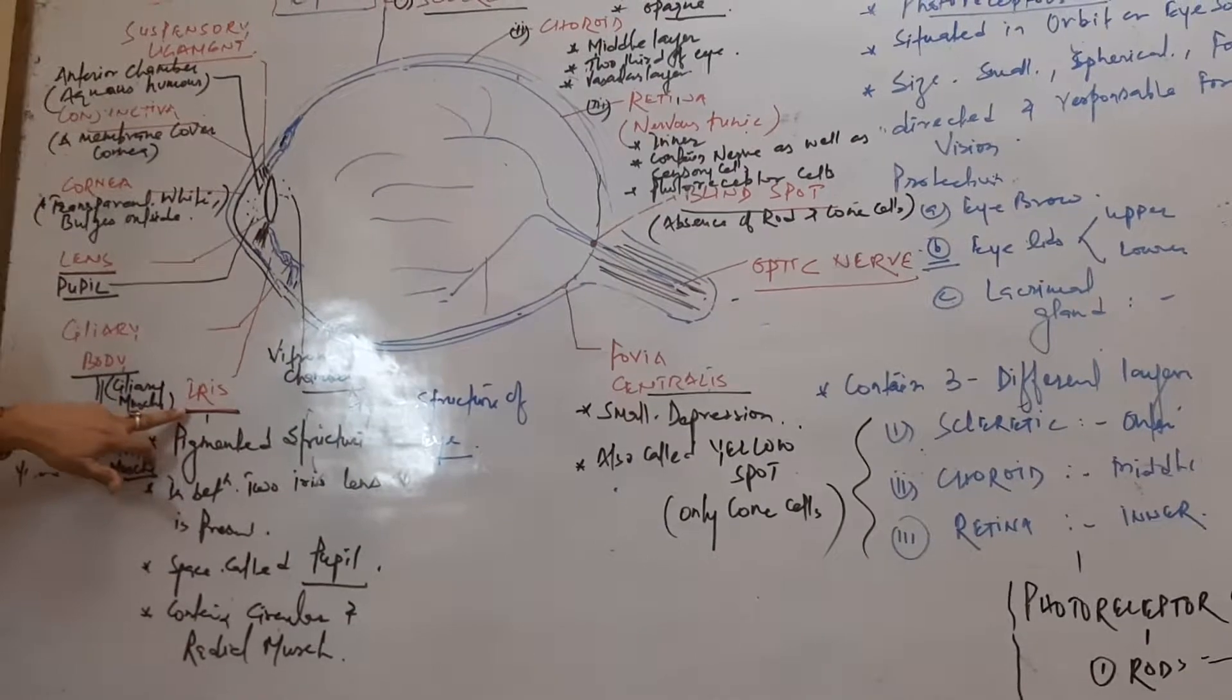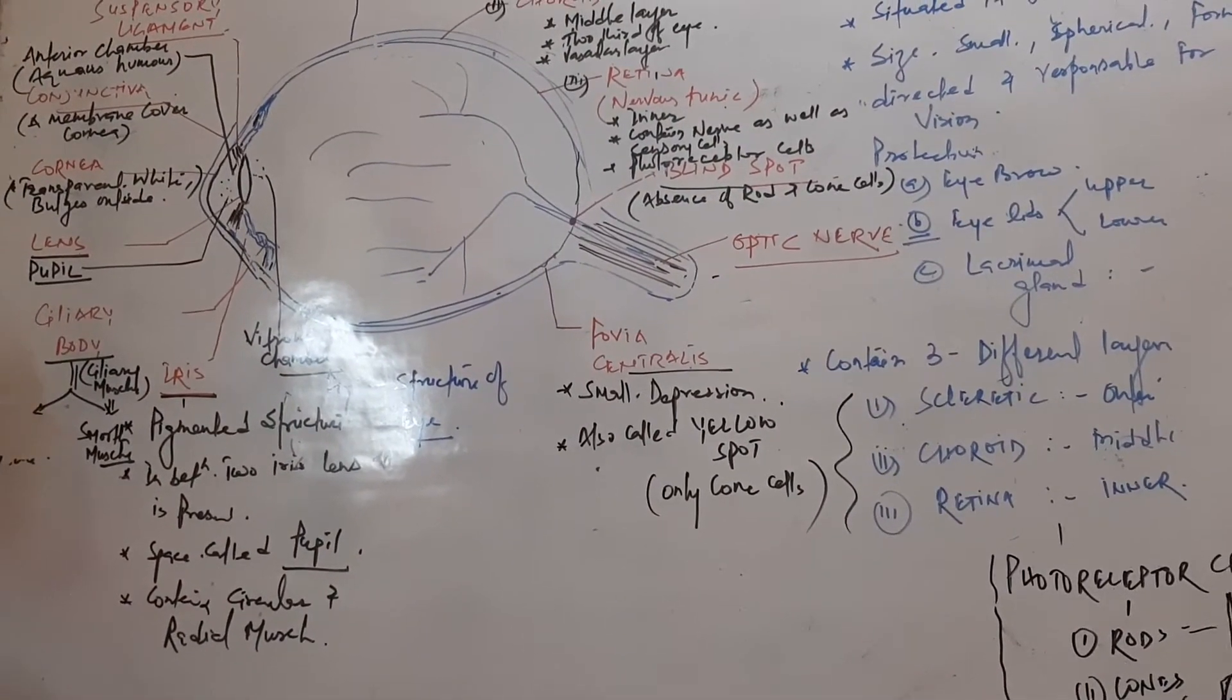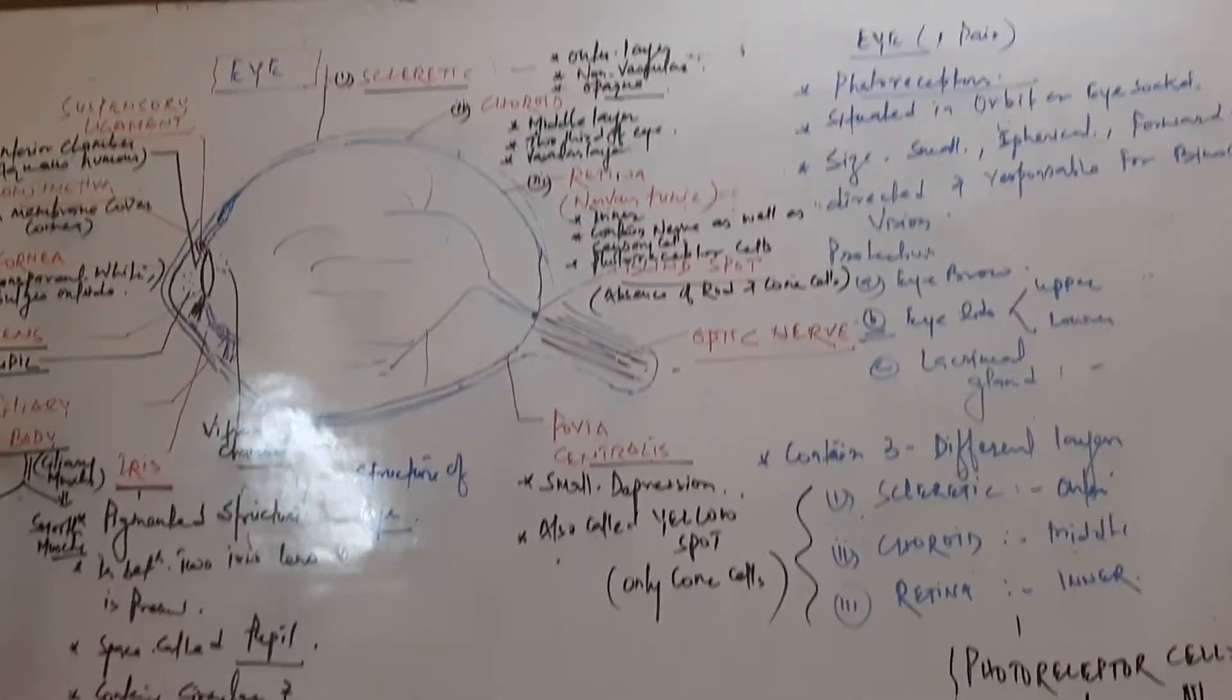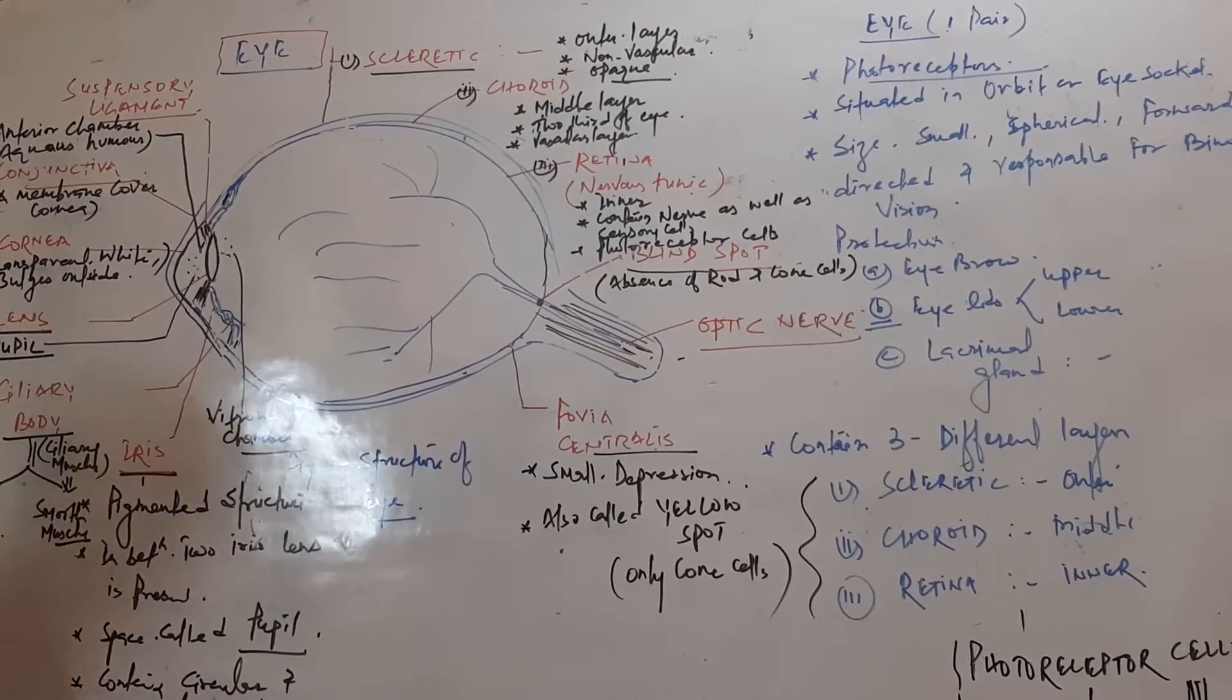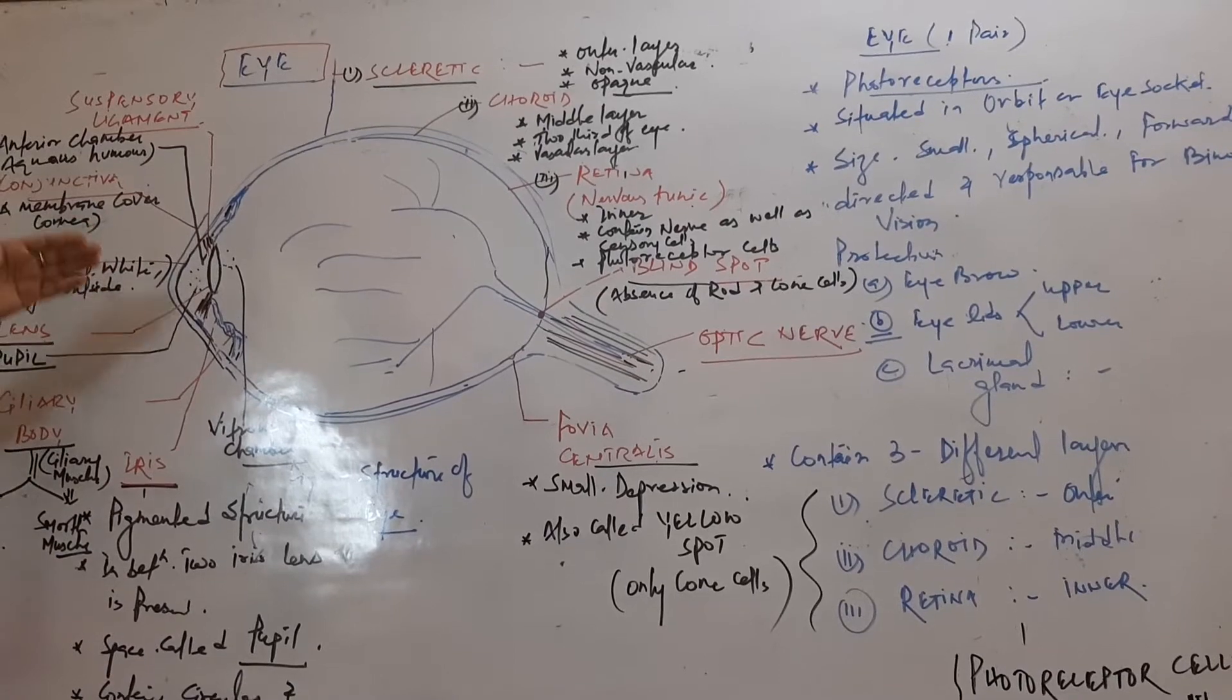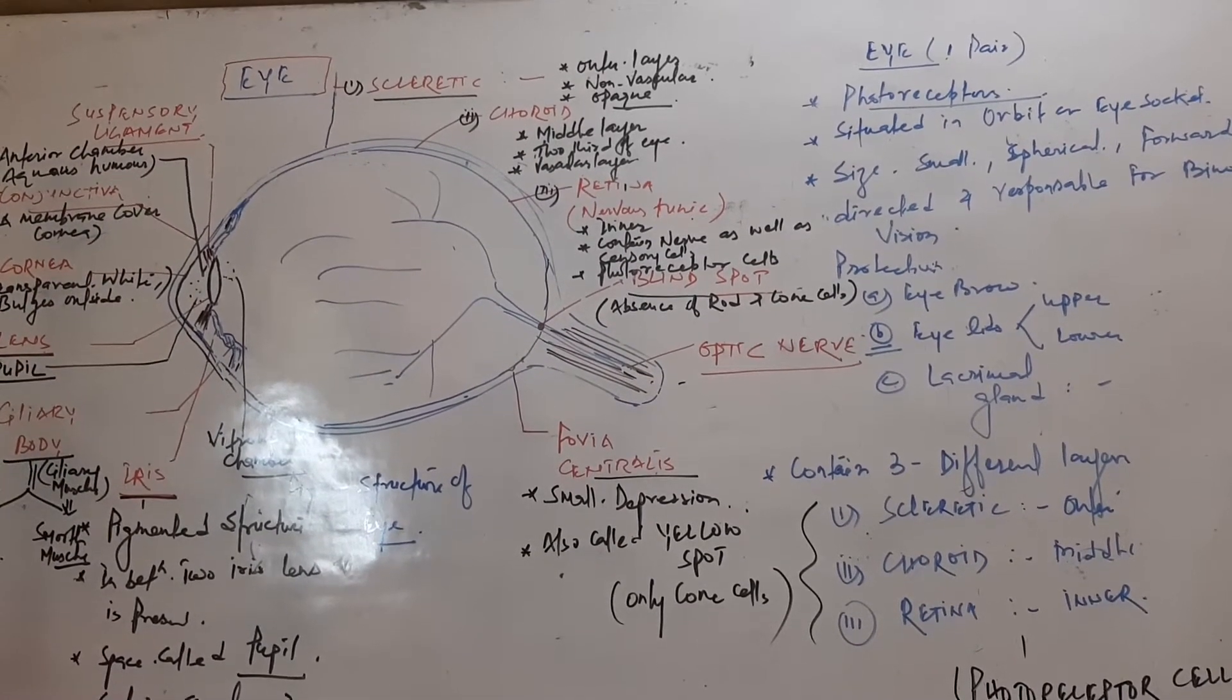Anterior to the ciliary body, a structure called iris is present. Between the iris, the lens is situated which is connected to the suspensory ligament. Iris is a colored or pigmented structure.